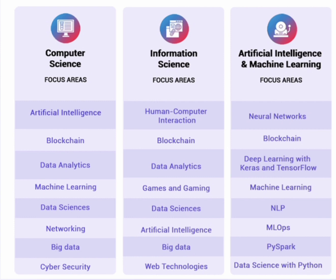A key difference in computer science is networking — the hardware side of skills. Networking is also present in ECE (electronics and communication), but it is not there in information science and not there in AIML. Students who study networking gain good skill sets across products and hardware components, which is common with ECE but not with the other two branches.